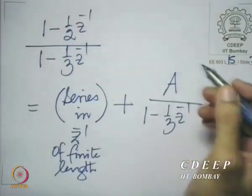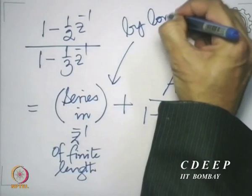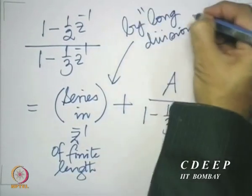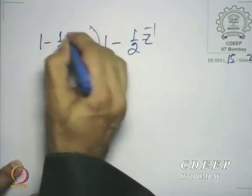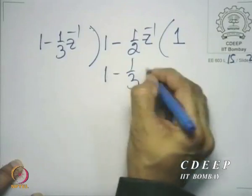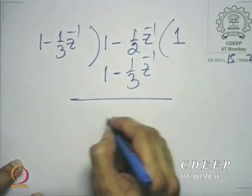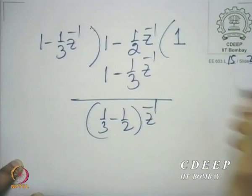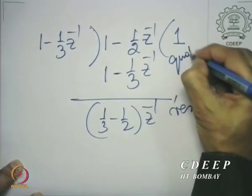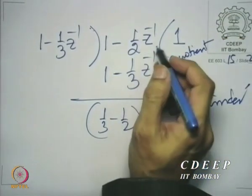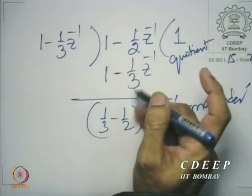We can obtain this series by a process of long division. Long division is what we conventionally studied even with integers, but here it is applied on rationals. So, (1 - ½z⁻¹) long divided by (1 - ⅓z⁻¹): it goes once, you remove a (1 - ⅓z⁻¹), leaving you with (⅓ - ½z⁻¹) as the remainder. However, I intentionally did what is actually not useful here.